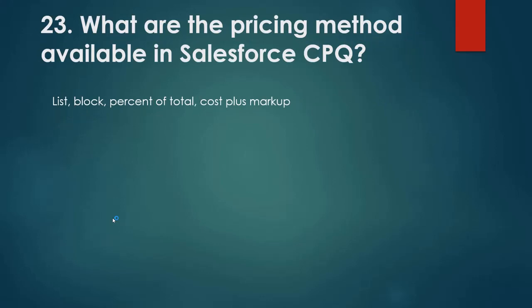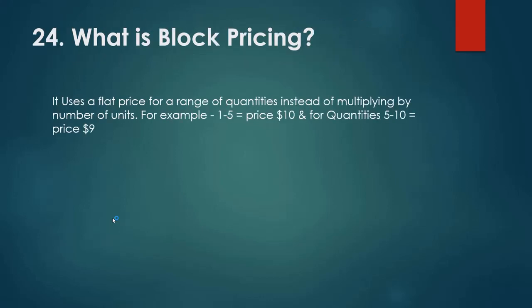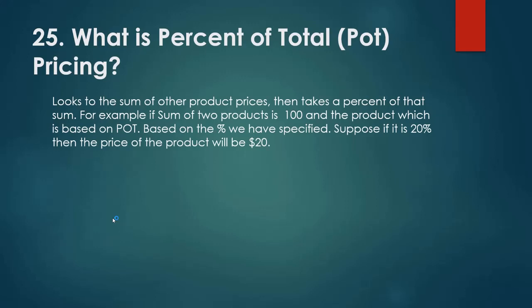What pricing methods are available in Salesforce CPQ? Salesforce CPQ includes pricing methods: list, block, percent of total, and cost plus markup. What is block pricing? It uses a flat price for a range of quantities instead of multiplying number of units. For example, for quantities one to five you can keep a price of ten dollars; for quantities five to ten you can keep a price of nine dollars. What is percent of total pricing? Percent of total pricing looks to the sum of other product prices and takes a percent of that sum. For example, if the sum of two products is $100 and the percentage specified is 20%, then the price of the product will be $20.